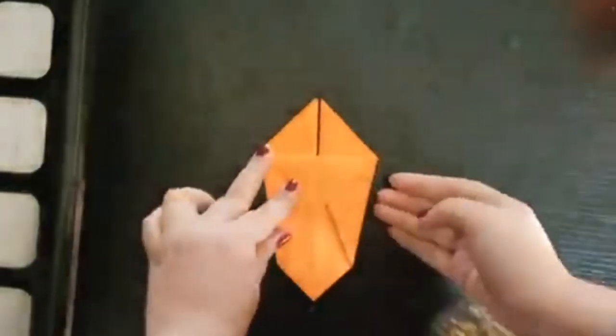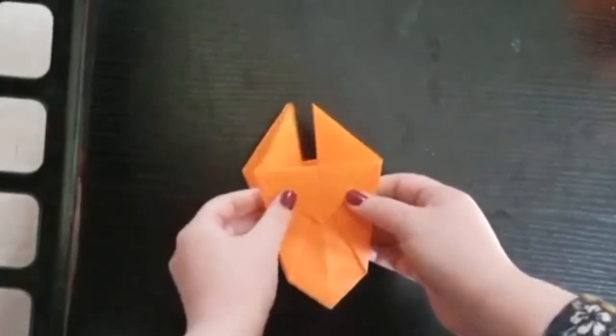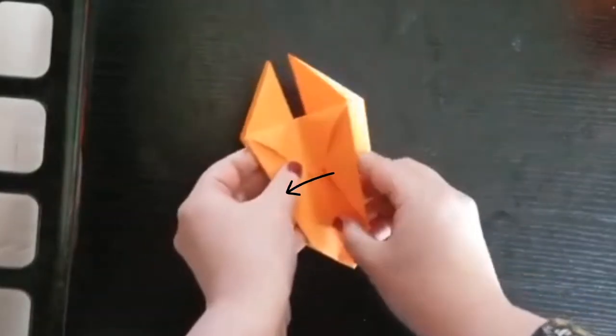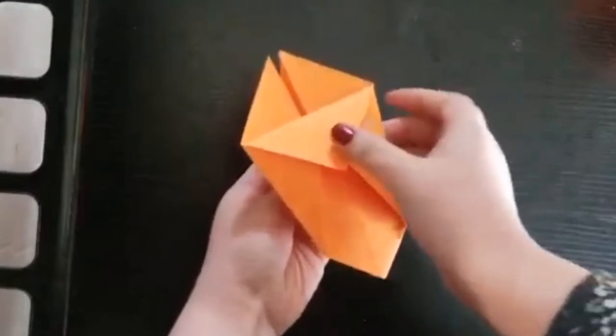Now gently slide your fingers in between the sides of your paper. We're going to fold the sides closest to us together. While holding that, we're also going to fold the other side together.